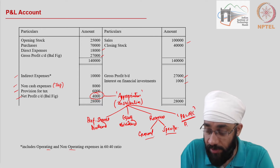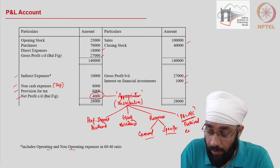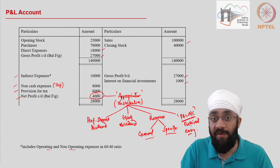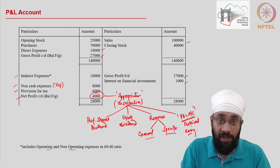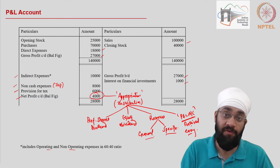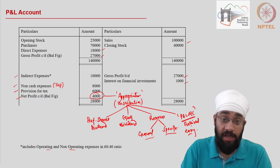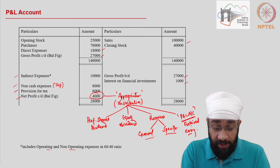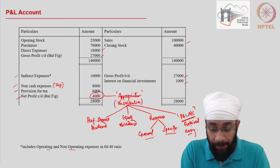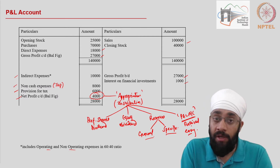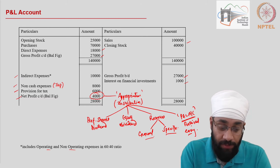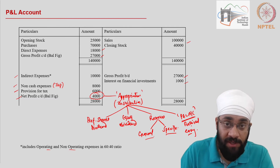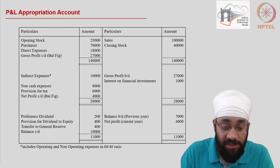Whatever is left after distributions and reserves gets added to the balance in the profit and loss account — this is called retained earnings. Retained earnings are carried forward to the next year, accumulating money over time even after paying everybody and saving for future contingencies. The profit made during the year is added to that amount. This appropriation process forms the third section of the profit and loss account, which is why it is called the profit and loss appropriation account.